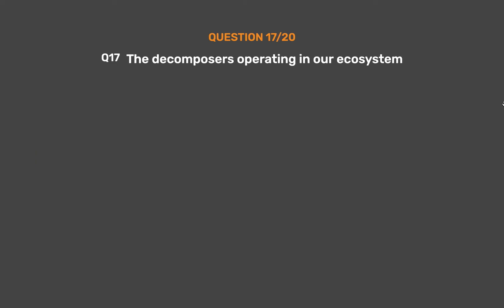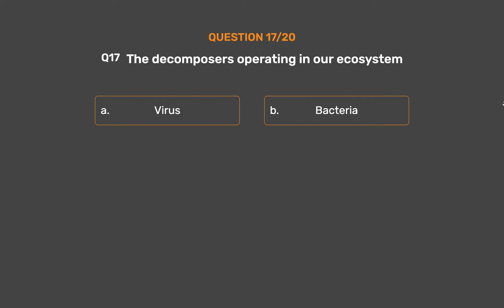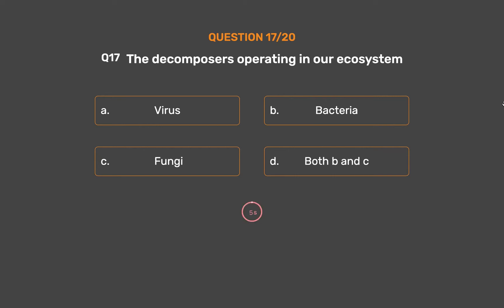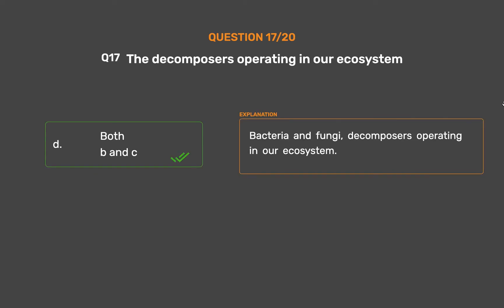Question number 17: The decomposers operating in our ecosystem are — Option A: Virus, Option B: Bacteria, Option C: Fungi, Option D: Both B and C. The correct answer is Option D, Both B and C. Bacteria and fungi are the decomposers operating in our ecosystem.